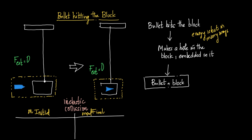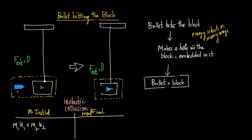Since energy is lost, this collision is definitely inelastic, in which case momentum initial equals momentum final. If we assign number 1 to the bullet and 2 to the block, the final momentum is written as (M1 + M2) having a common final velocity V2, since they move together.